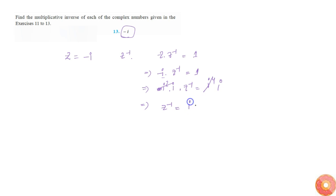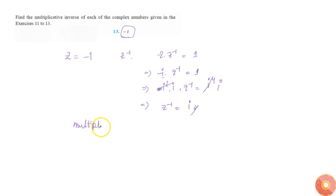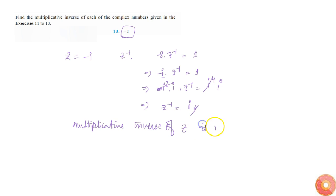After cancelling i cube, i will remain. So z inverse becomes i. Therefore, the multiplicative inverse of z is i.